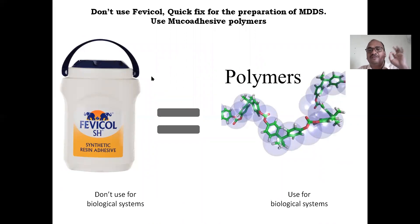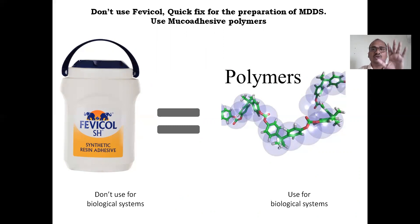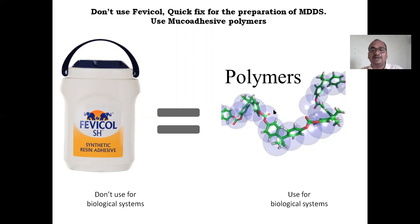Don't use actual fevicol glue for mucoadhesive formulations. We want adhesion, but we fix it with the formulation — we do not adhere using gum. Don't use it for biological systems. This is only for in vitro, not in vivo. In vivo, within the body, you have to use biological polymers that are almost equivalent to fevicol-like polymers — they have adhesion in nature.